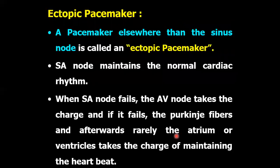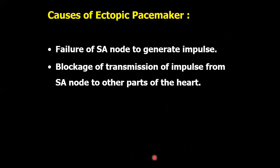Ectopic pacemaker: a pacemaker elsewhere than the sinus node is called an ectopic pacemaker. The SA node maintains the normal cardiac rhythm. When the SA node fails, the AV node takes charge; if it also fails, the Purkinje fibers take over, and afterwards the atrial or ventricular muscles initiate the impulses. Causes of ectopic pacemaker: failure of the SA node to generate impulse, or blockage of transmission of impulse from the SA node to other parts of the heart — that is, in cases of heart block.